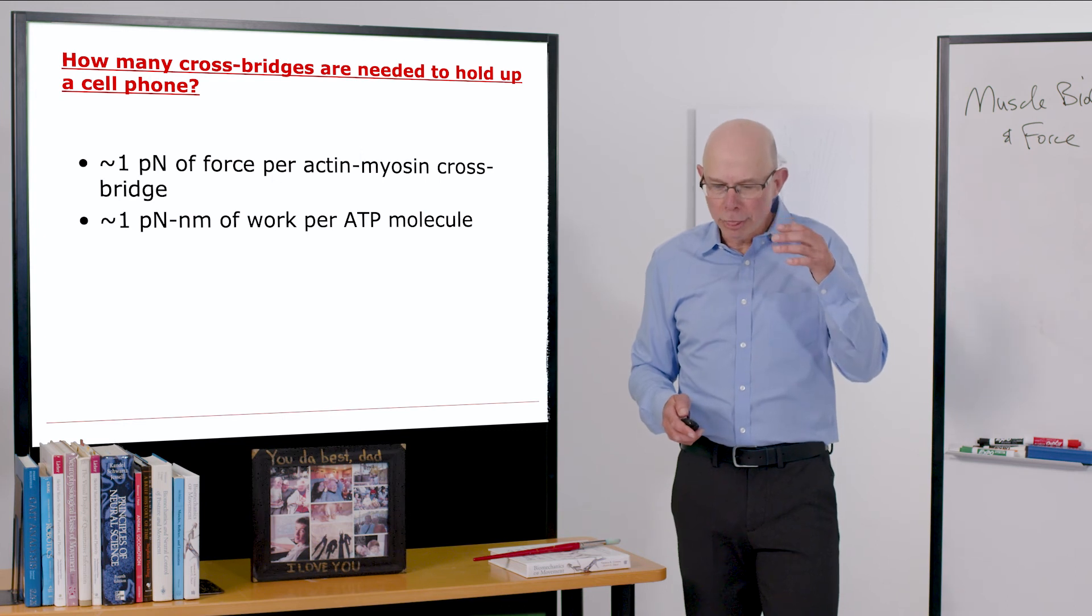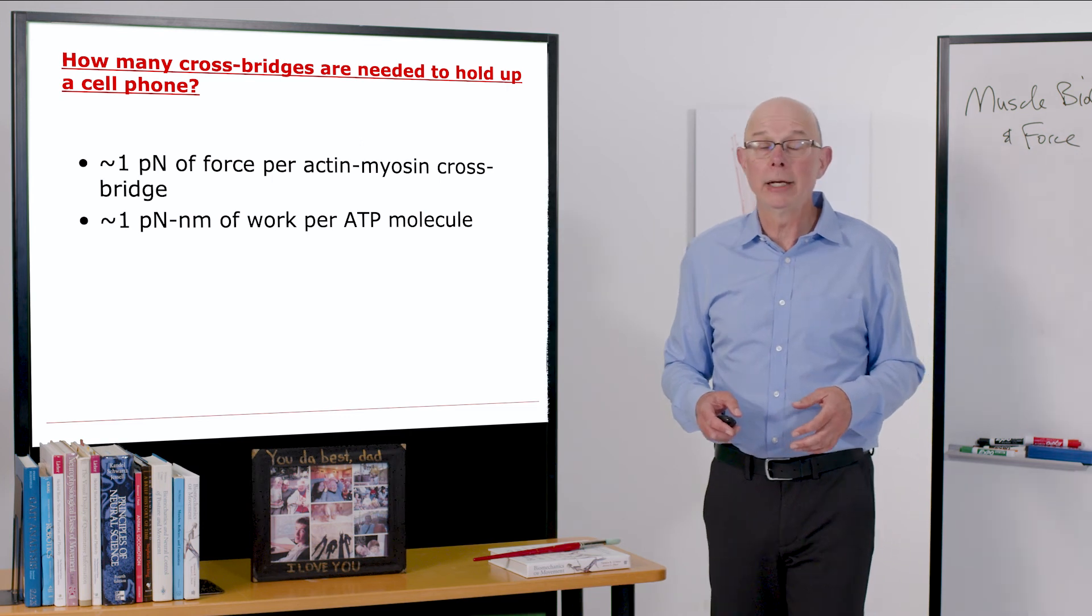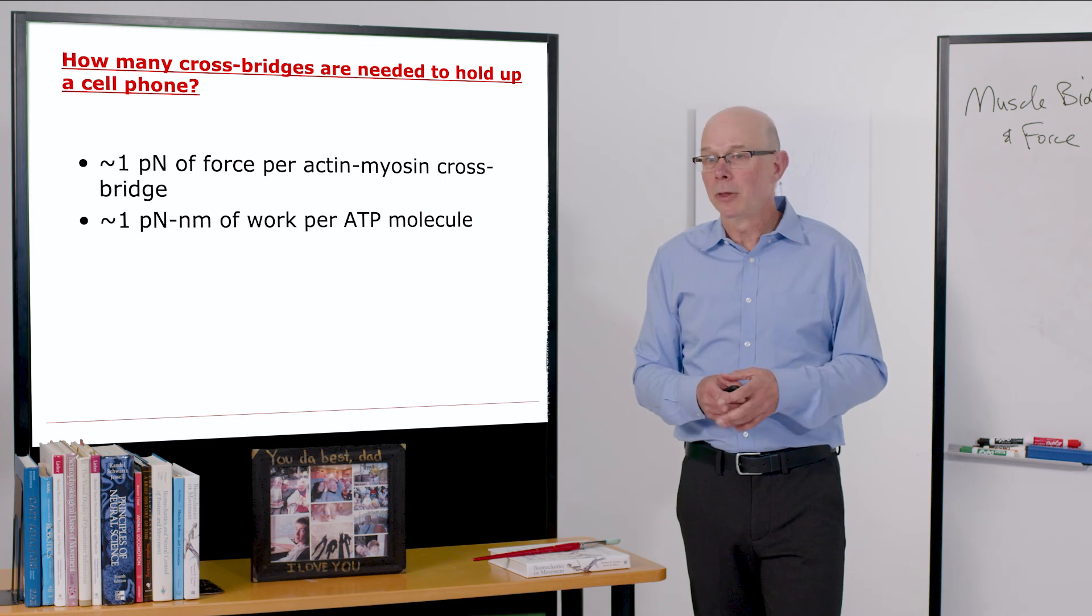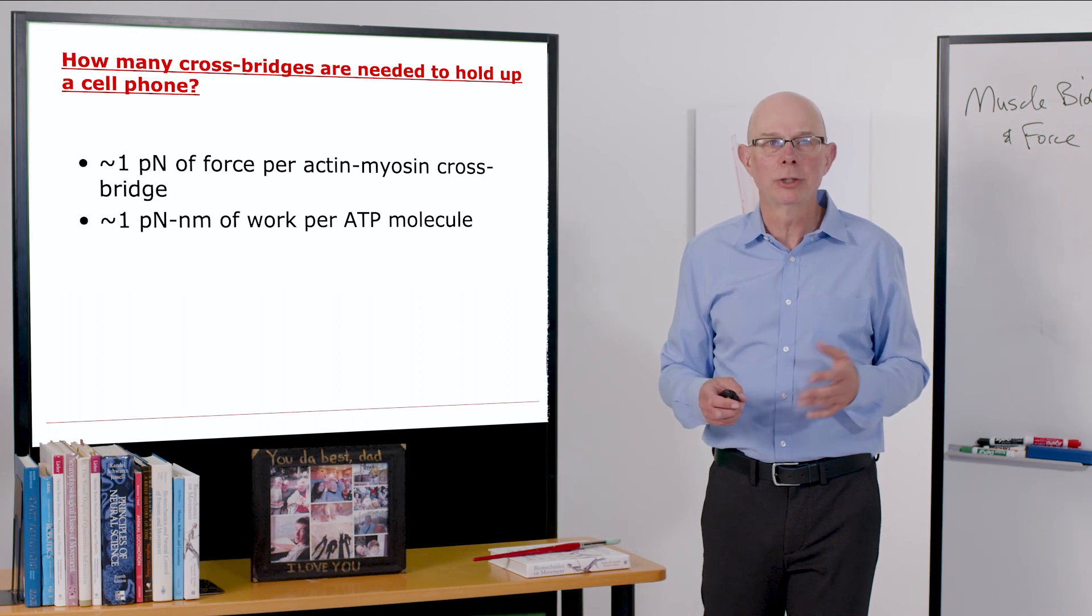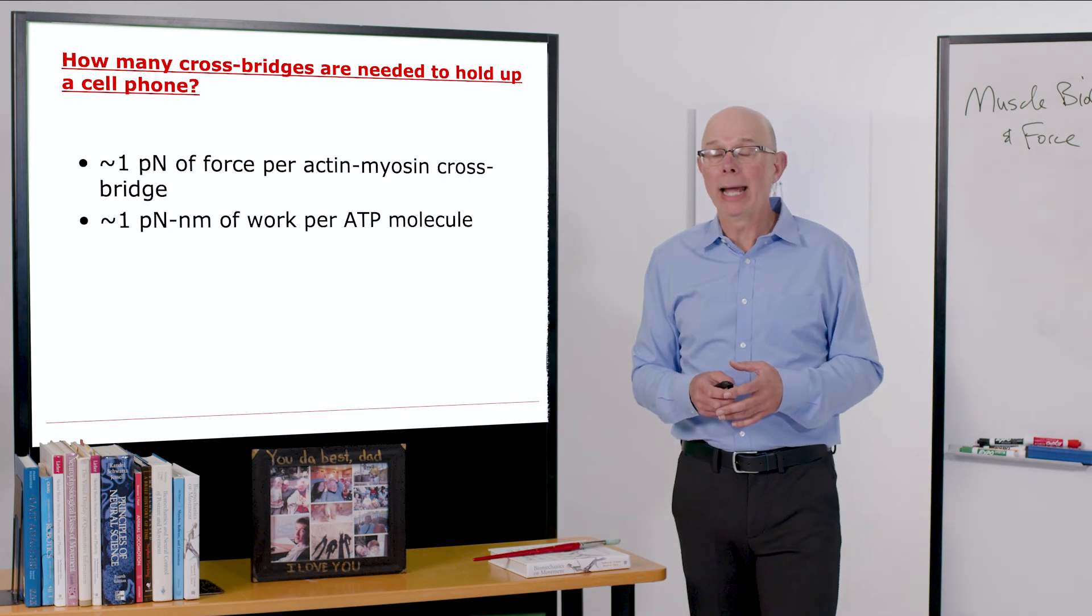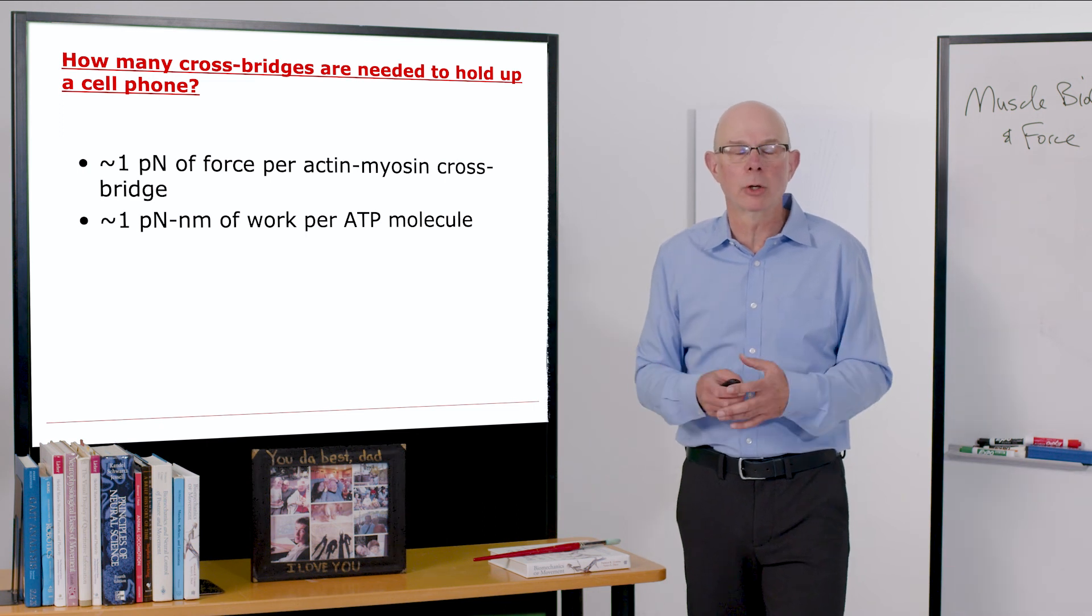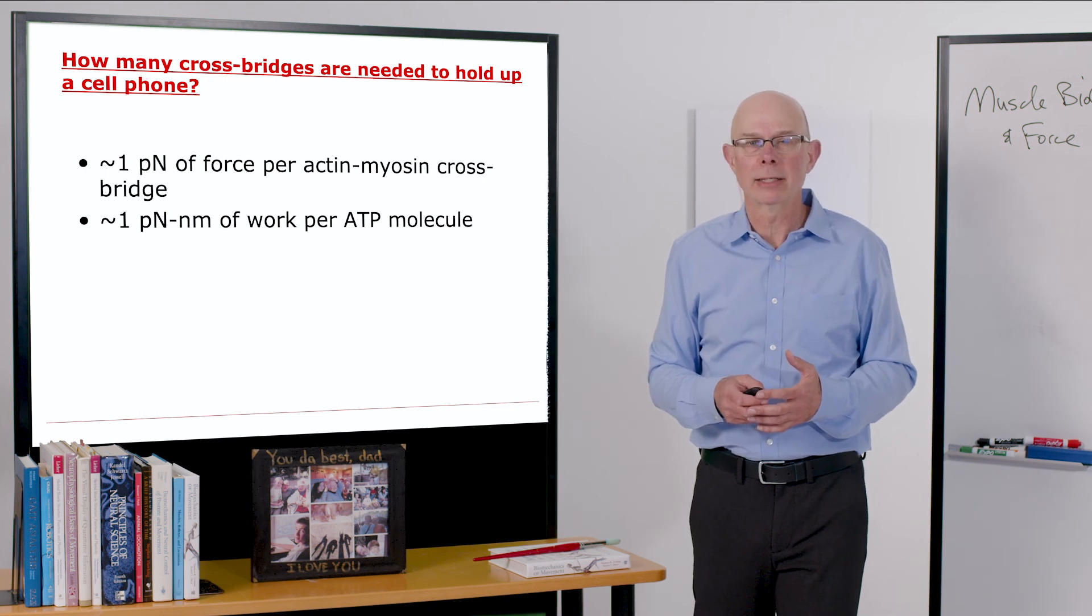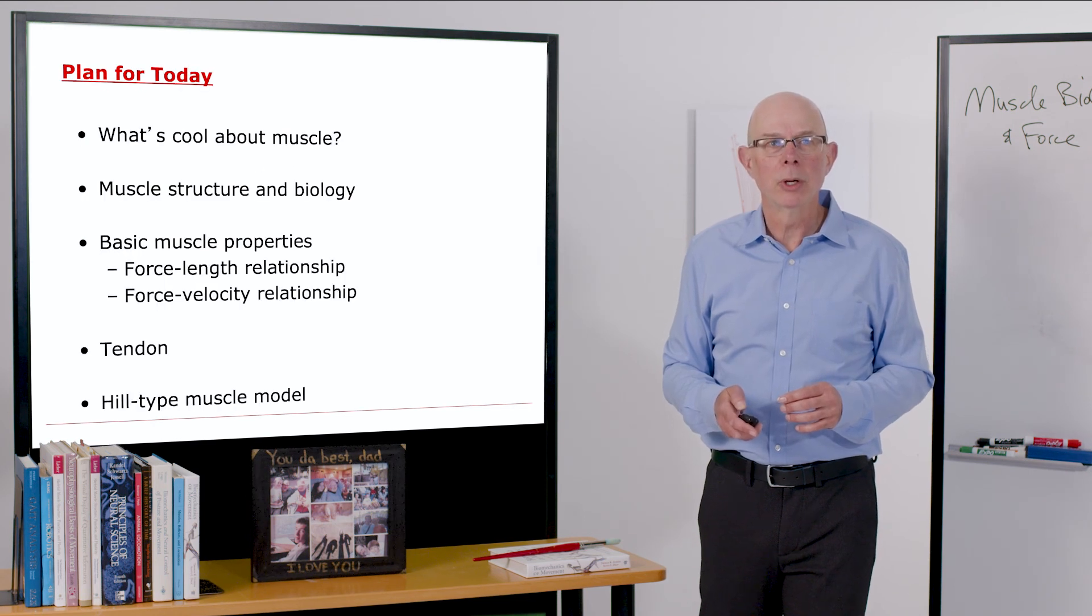Just a little thought experiment and a calculation that I'd like you to make. How many cross bridges are needed to perform a very simple task? Just holding up a cell phone. The basic data you need, you get about one piconewton of force per actin-myosin cross bridge, and about one piconewton nanometer of work per ATP molecule. So all you need to do is estimate the mass of a cell phone, say a tenth of a kilogram, and figure out what it would take to hold up a cell phone in terms of the number of actin-myosin interactions. Go ahead, make that calculation.